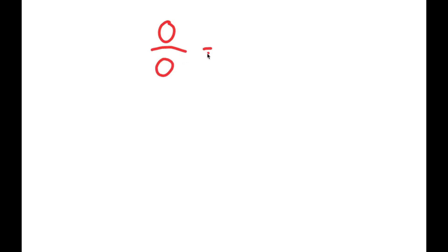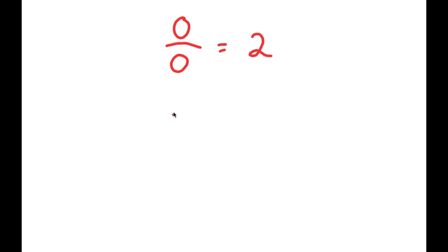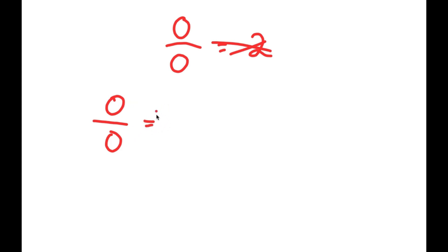In this video I'm going to prove that 0 divided by 0 is equal to 2. Let's start by writing out 0 over 0. Well, 0 over 0 is the same thing as 1 minus 1 over 1 minus 1, because 1 minus 1 is 0, so this is the same thing as 0 over 0.